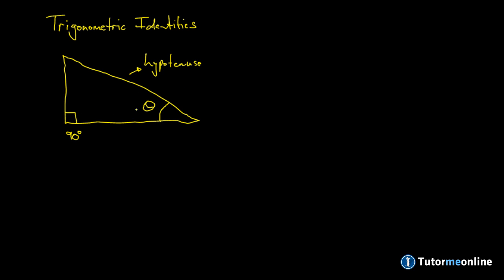Then we have the side that is opposite the angle theta. This is referred to as the opposite side. Then we have the angle that is adjacent to the angle theta. This is very aptly named the adjacent side.